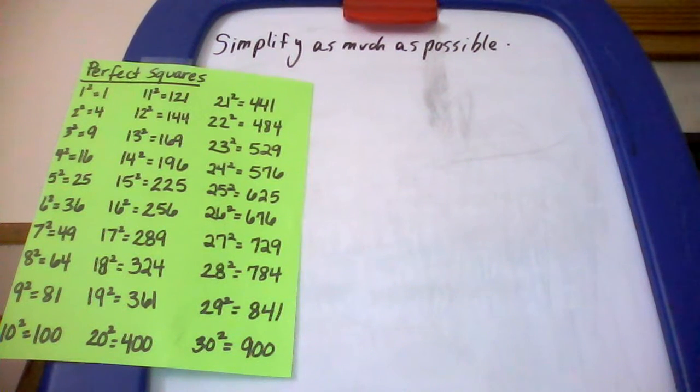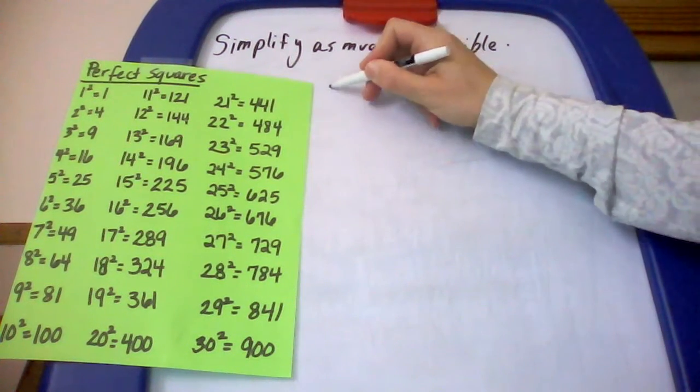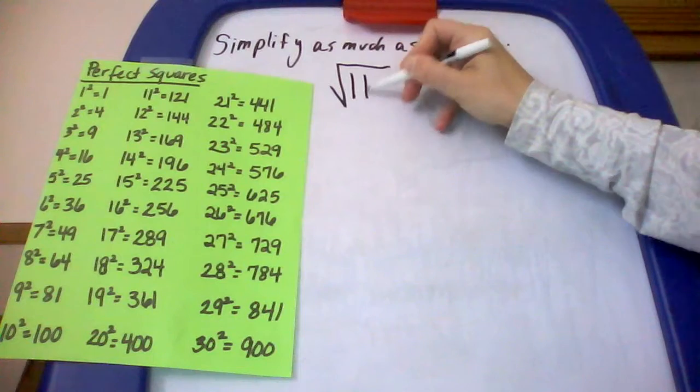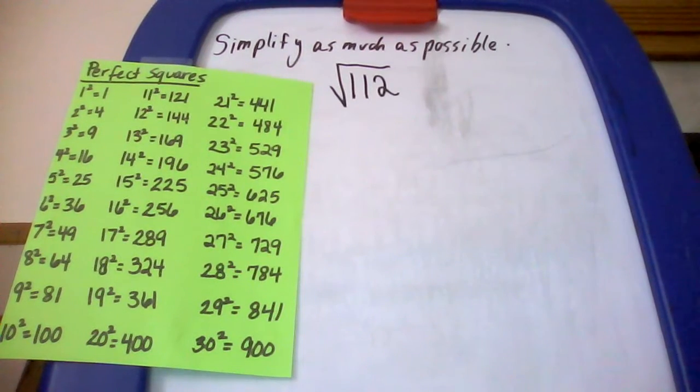Solutions for two of those last problems that we did. The first is square root of 112. We're going to simplify it as much as possible. First go through and see is 112 on your list of perfect squares. It is not.